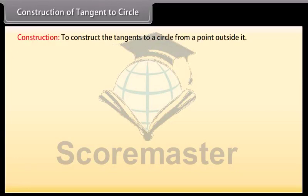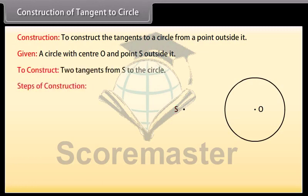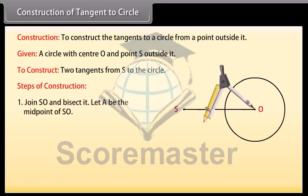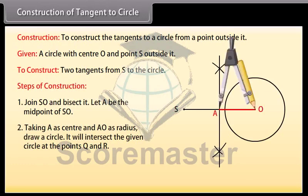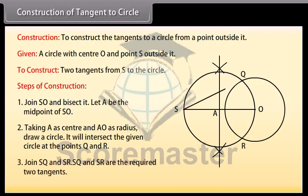Construction of tangents to a circle from a point outside it: we are given a circle with centre O and a point S outside it. We have to construct the two tangents from S to the circle. Steps of construction: Join SO and bisect it. Let A be the midpoint of SO. Taking A as centre and AO as radius, draw a circle. It will intersect the given circle at the points Q and R. Join SQ and SR. SQ and SR are the required two tangents.